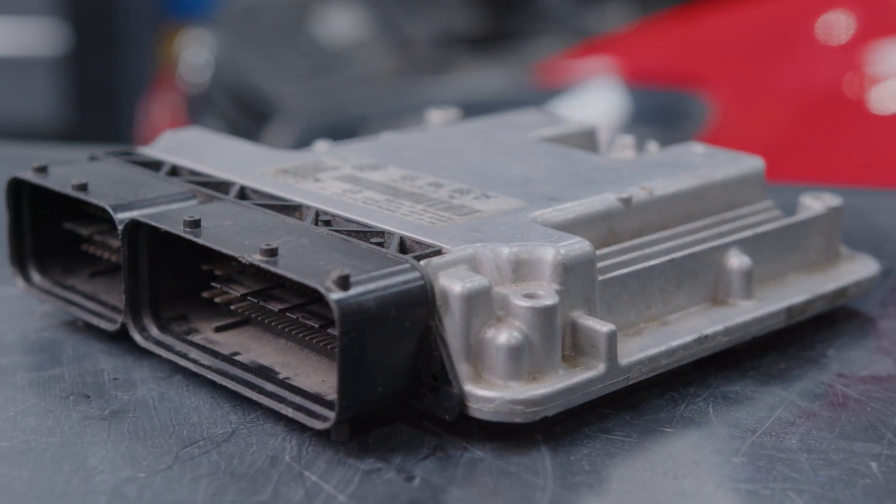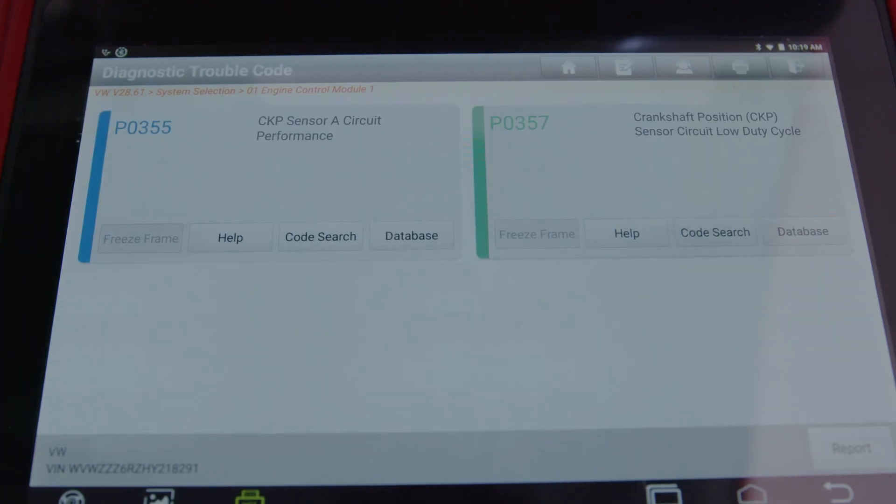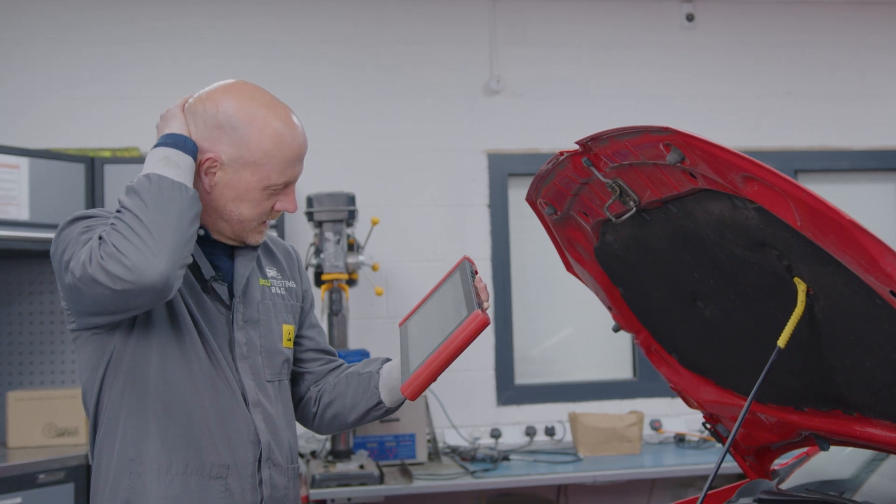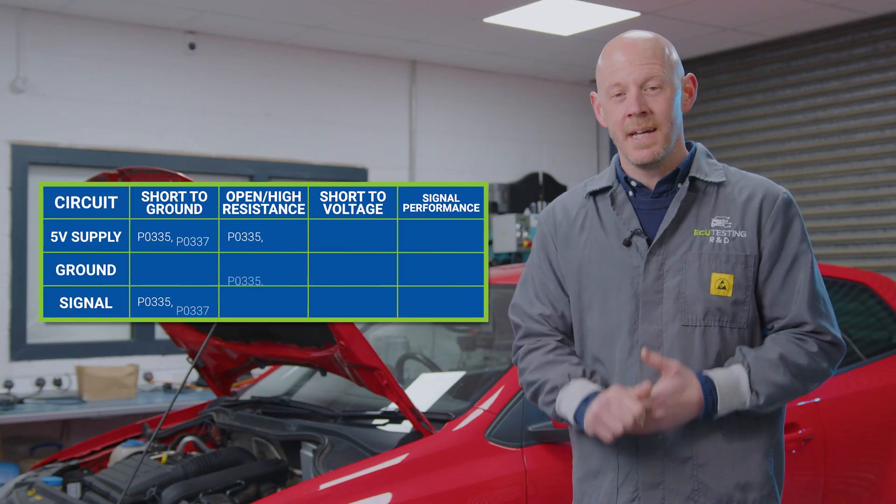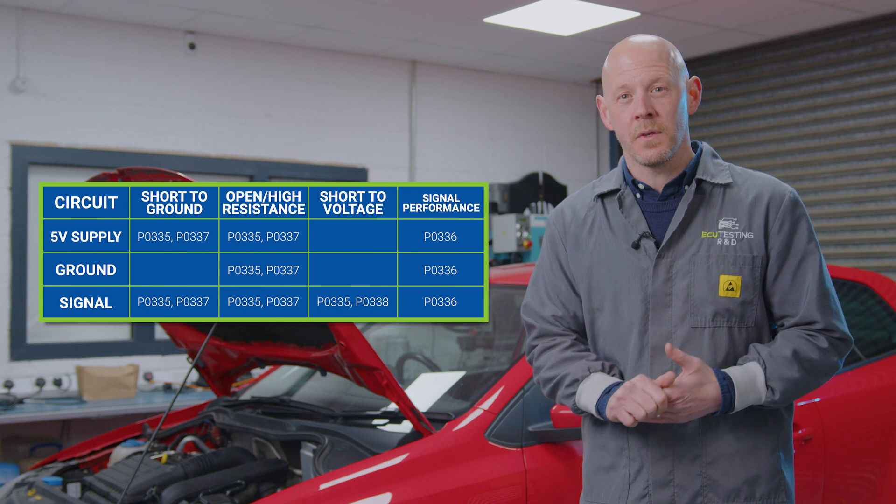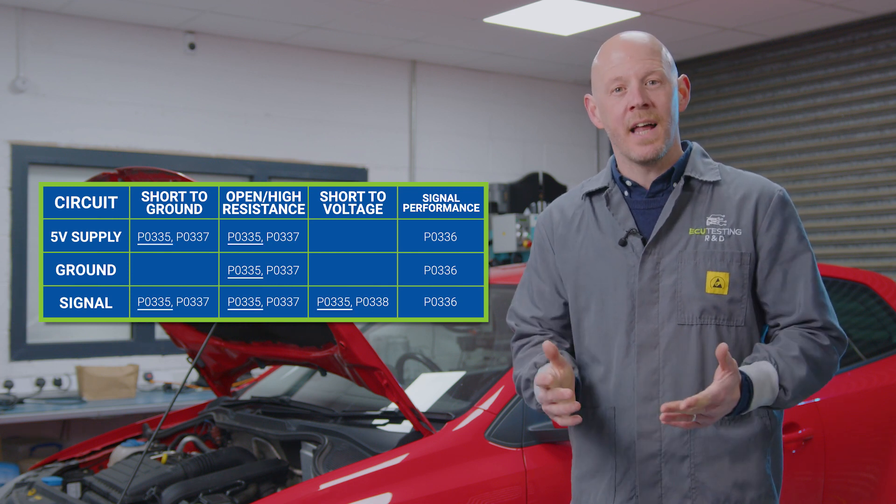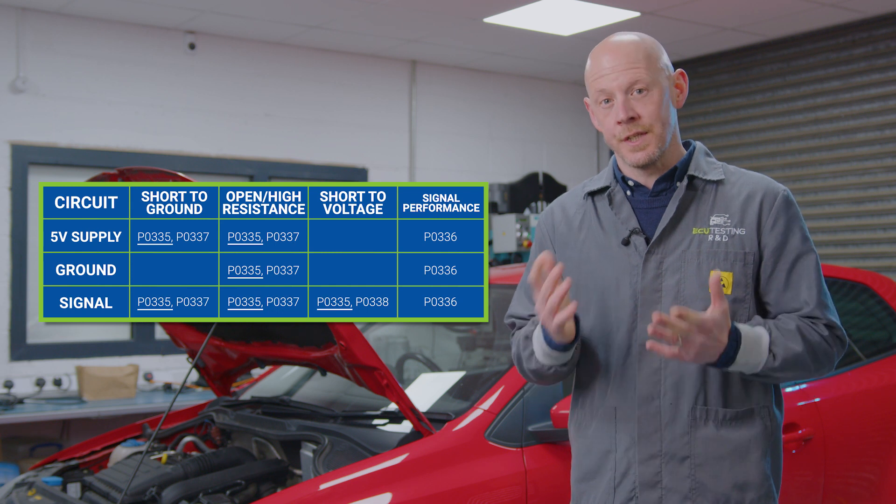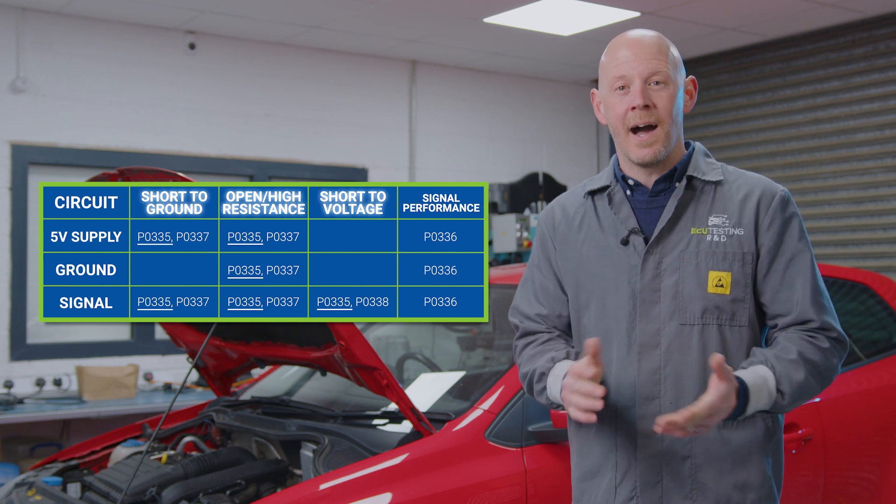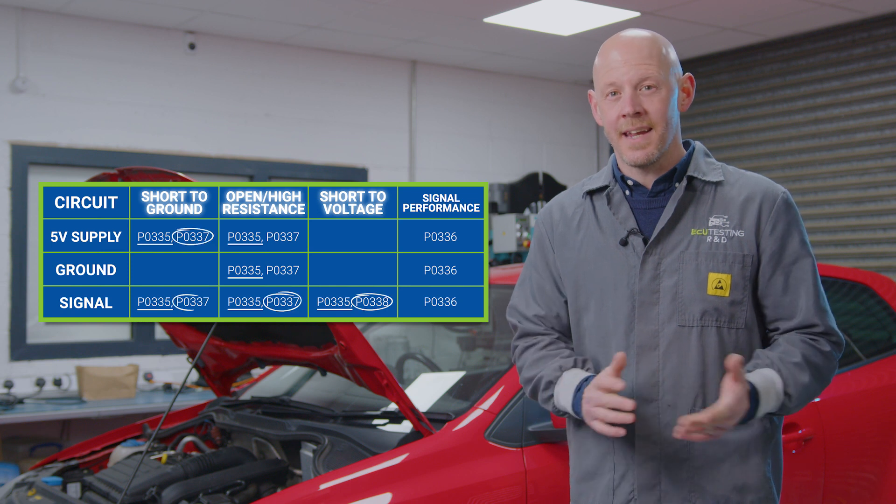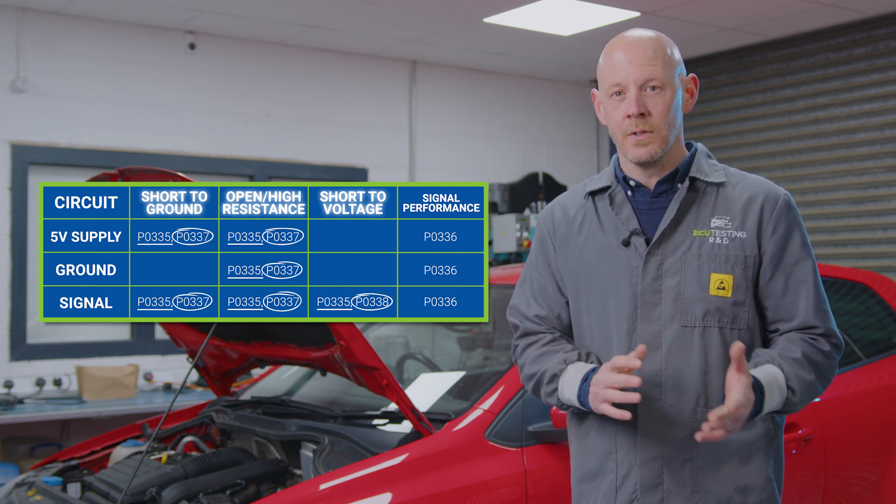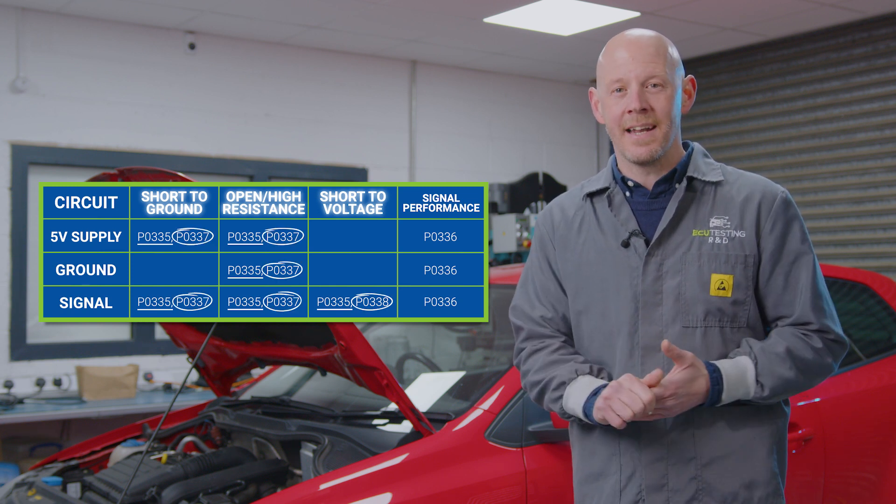It is at this point where the fault codes you are experiencing can help determine what the cause of the fault could be, and how to test for it. As you can see, P0335 Crankshaft Position Sensor Circuit Malfunction can be flagged by a variety of issues, such as a short to ground, short to voltage, and an open or high resistance. So identifying any secondary fault codes for high or low circuit inputs here is very handy.